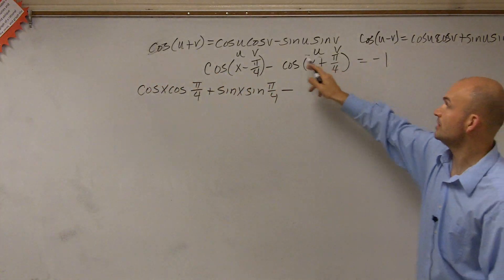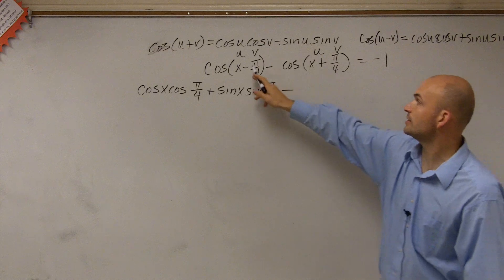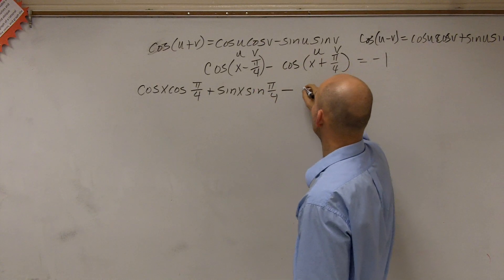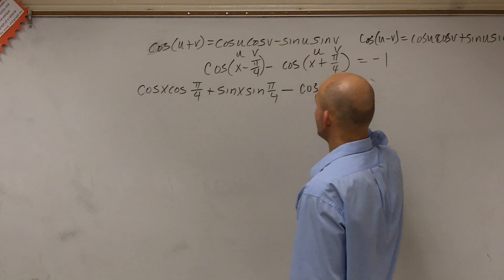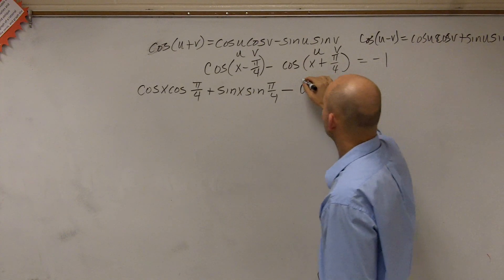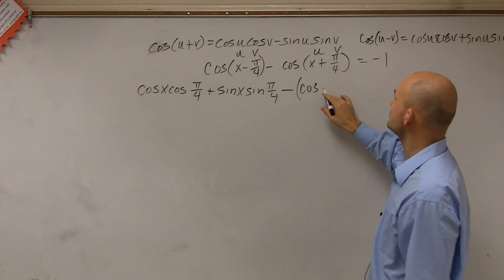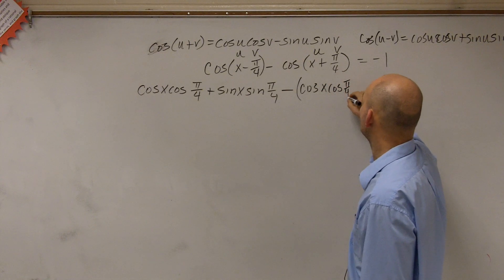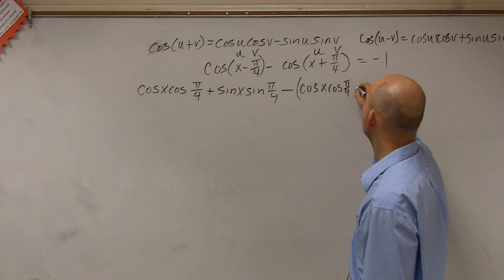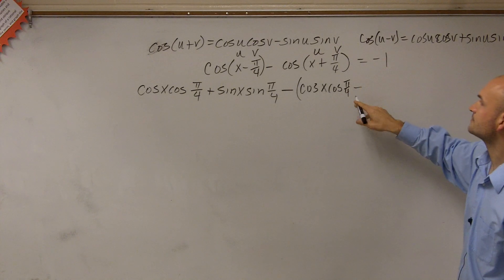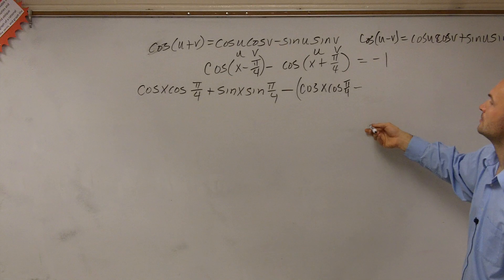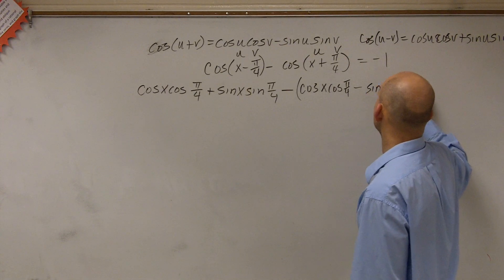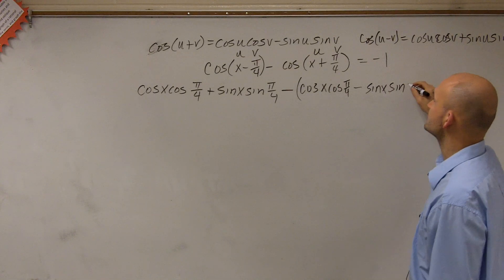Now I'm going to use the sum formula, and I'm just going to apply these formulas where this is going to be my x, and this will be my v, or my u and my v. So now I have minus the cosine, put this over in parentheses, minus the cosine of u, which is x, times the cosine of v, which is pi over 4, minus the sine of x times the sine of v, which is pi over 4.